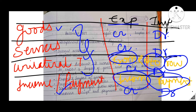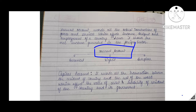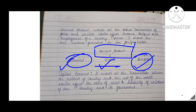Now, Balance of the current account can also be balanced, deficit, or surplus. Whenever your income, exports, and unilateral transfers received from abroad are more than your imports, payments, and unilateral transfers sent abroad, that is a surplus current account. When all these things are equal, it is balanced. And when exports, income, and unilateral transfers received are less compared to imports, payments, and unilateral transfers sent abroad, that is a deficit current account.